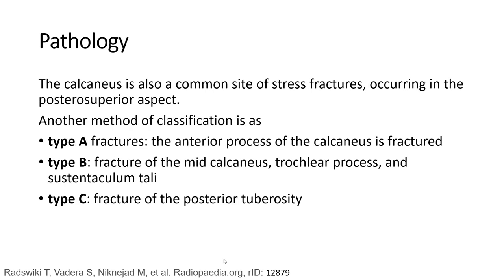The calcaneus is also a common site of stress fracture, occurring in the posterior superior aspect. Another method of classification is the Type system: Type A, the anterior process of the calcaneus is fractured; Type B, fracture of the calcaneus peroneal trochlea process and sustentaculum tali; Type C, fracture of the posterior tuberosity.